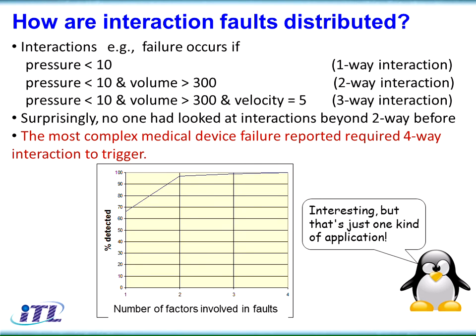This is how the interaction faults are distributed in the FDA data. The y-axis is the percentage of faults detected. Roughly two-thirds were triggered by a single factor, and better than 95% by two factors. We didn't see anything that involved more than four factors. These are medical devices, and most of them could be life-critical — so that's the distribution of errors for that application domain.